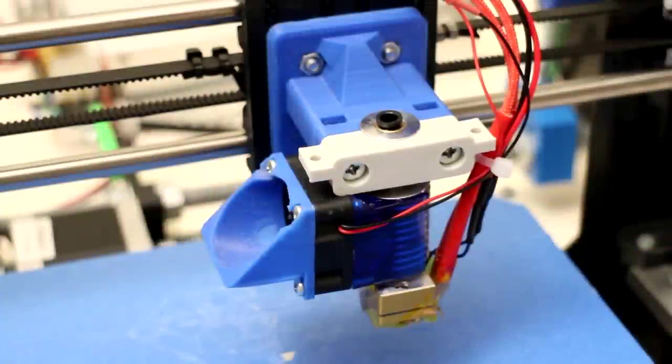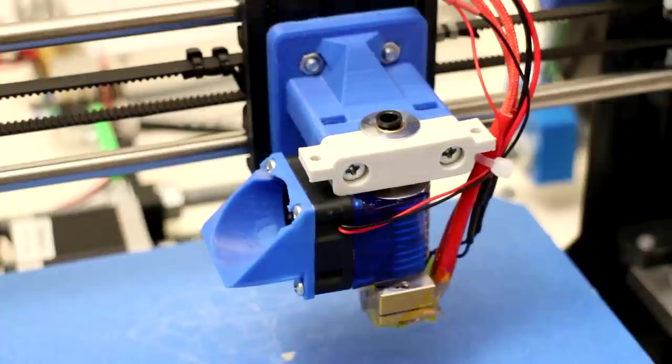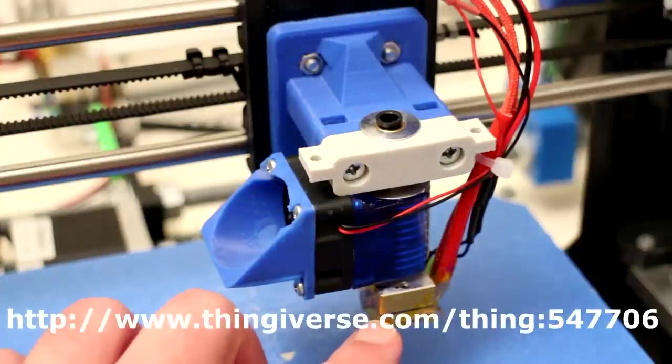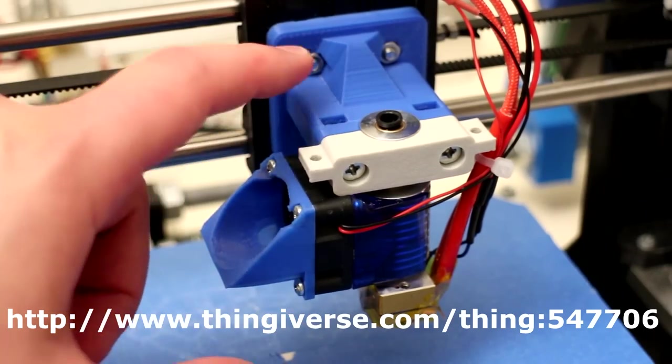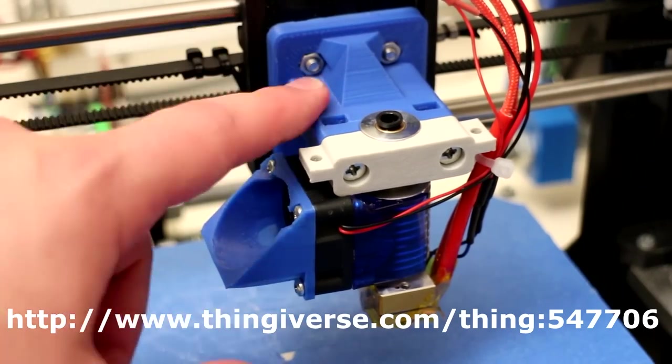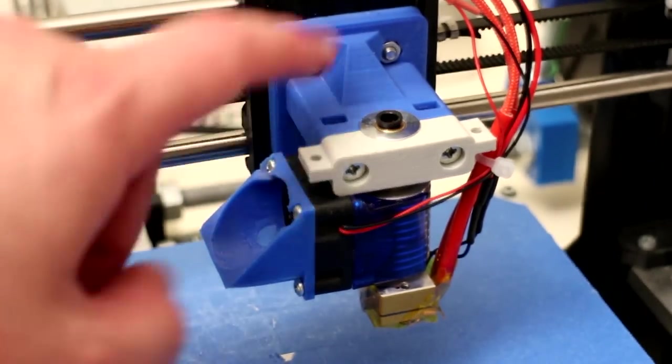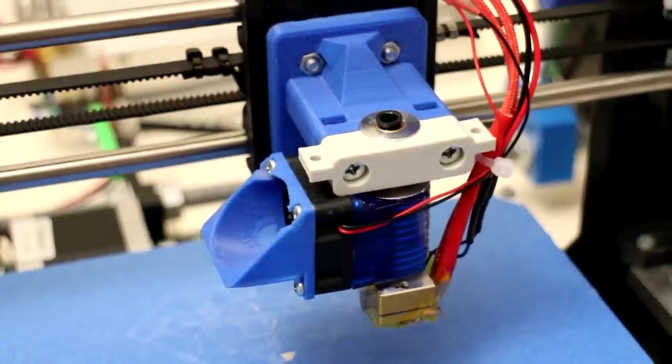You're also going to have to download and print out a compatible Bowden X-axis carriage mount for your hotend. I have the e3d version 6 and I've designed up an e3d compatible Bowden X-carriage mount. Feel free to download and print this one out otherwise there's plenty of other choices on Thingiverse.